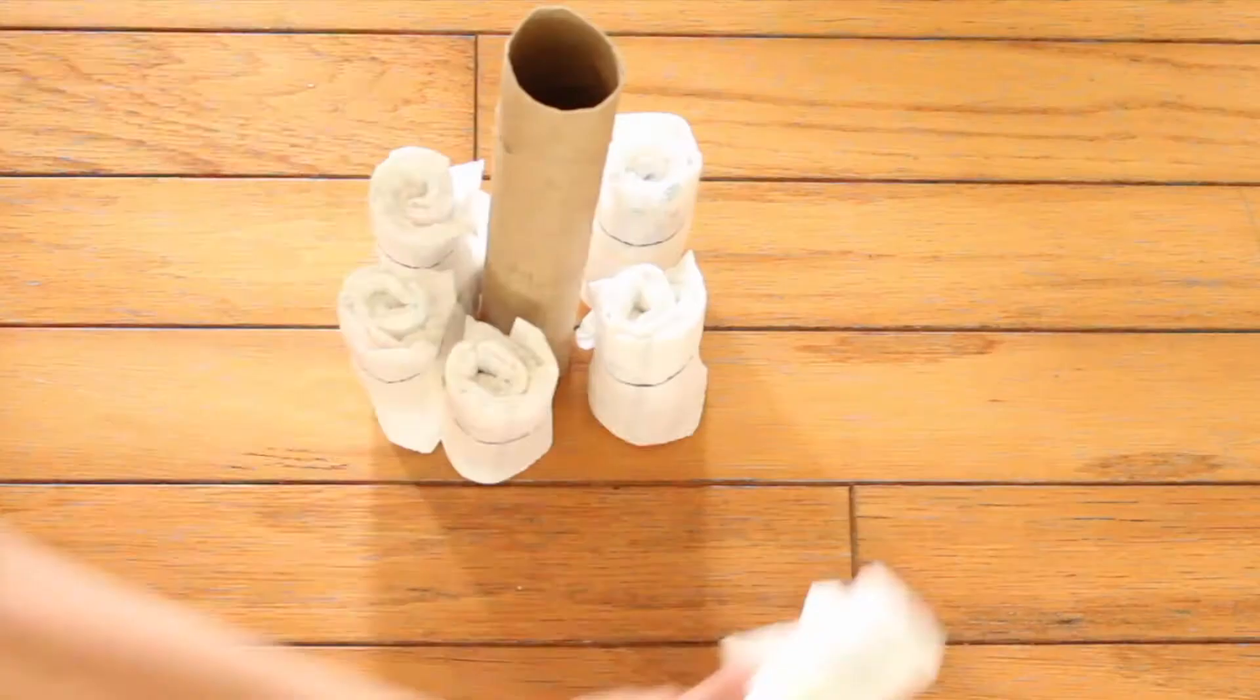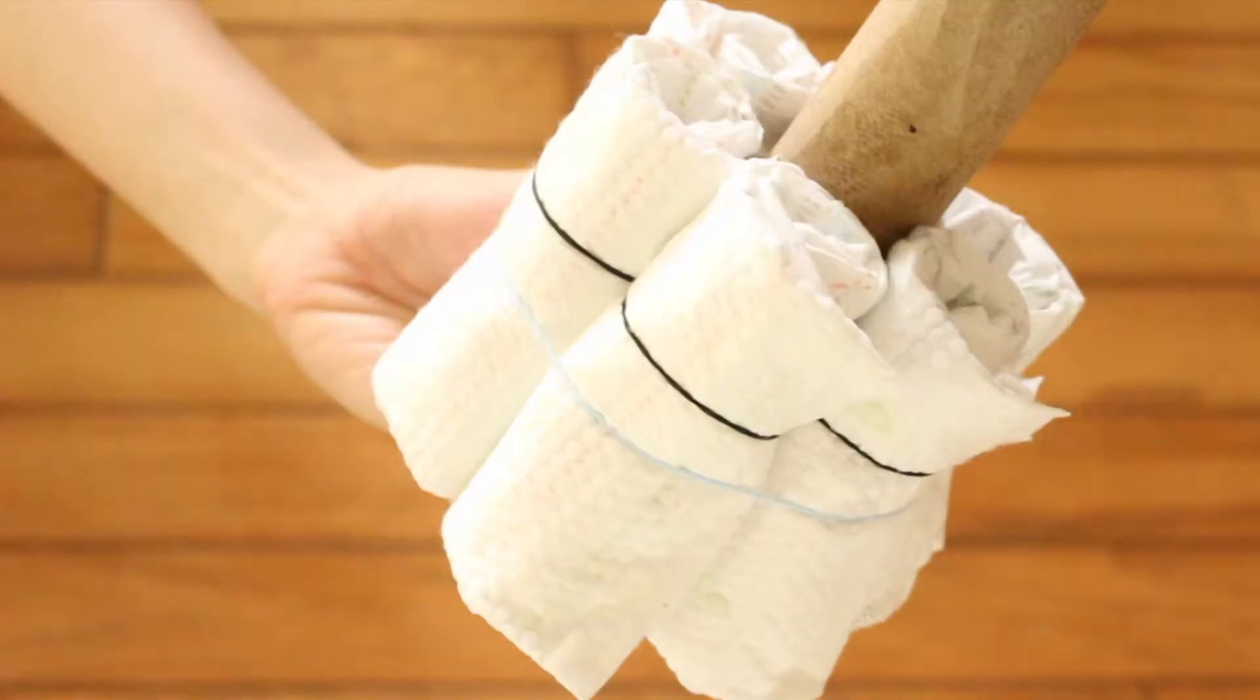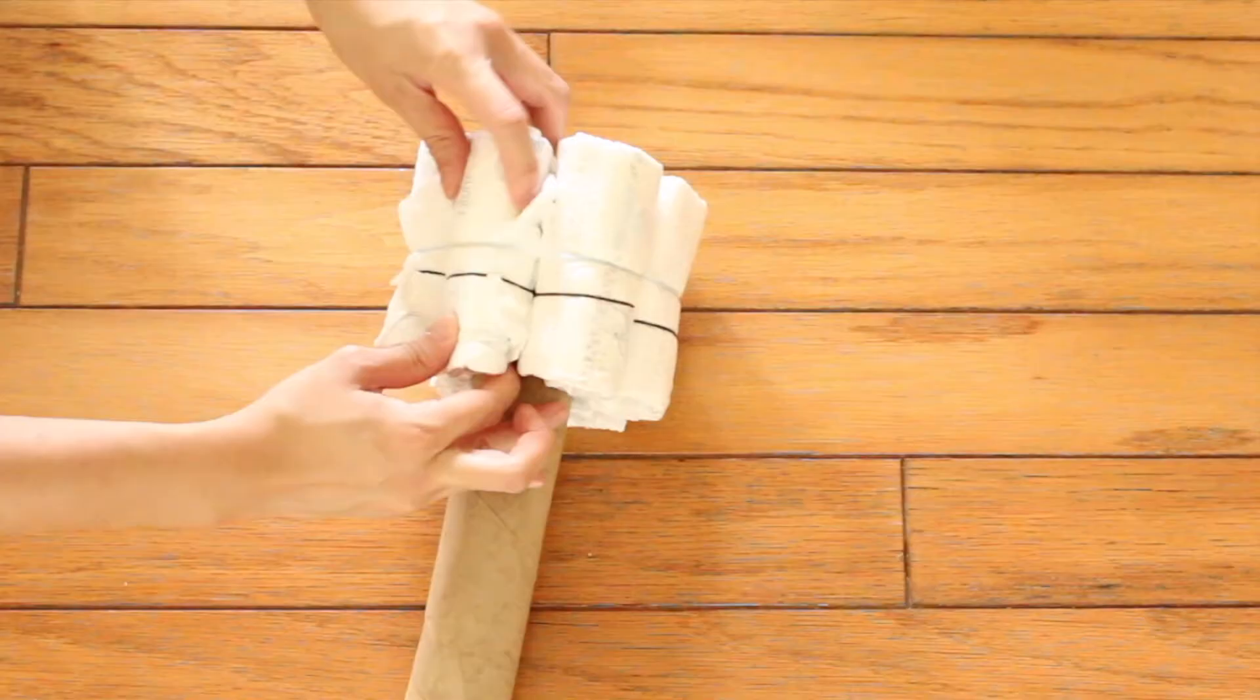Then, wrap them around the paper towel roll. Tie yarn to hold it in place. Turn the rolled diaper so the ends are facing in for a cleaner look.